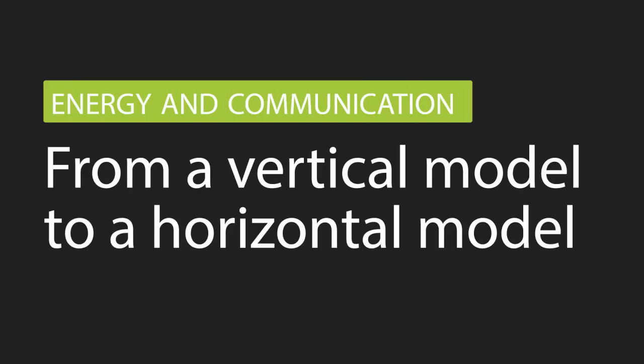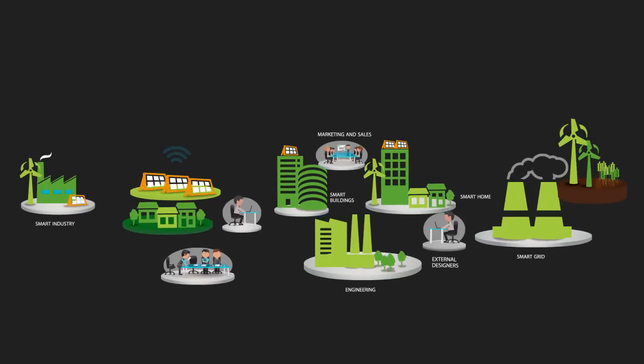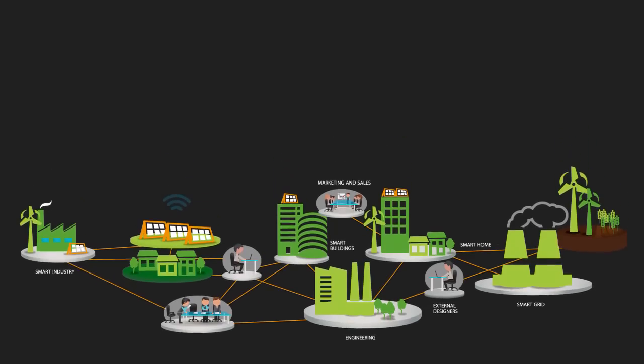Whether it is for energy or communication, the transition we are now seeing is characterized by a shift from the current centralized and vertical model toward a horizontal production, distribution and consumption model. Which is where the Internet of Things comes in.